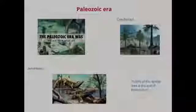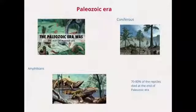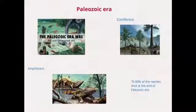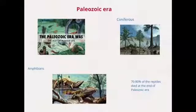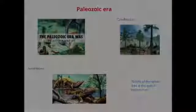Paleozoic era. Here the plants become more complex. Most of the plants were conifers. The animals were very scarce, but the oceans were crowded with many invertebrate animals. Finally, amphibians were developed after some fish evolution, allowing them to breathe but still needing water to reproduce. They indeed evolved to reptiles, finally living on land. But these reptiles, at the end of this era, disappeared.